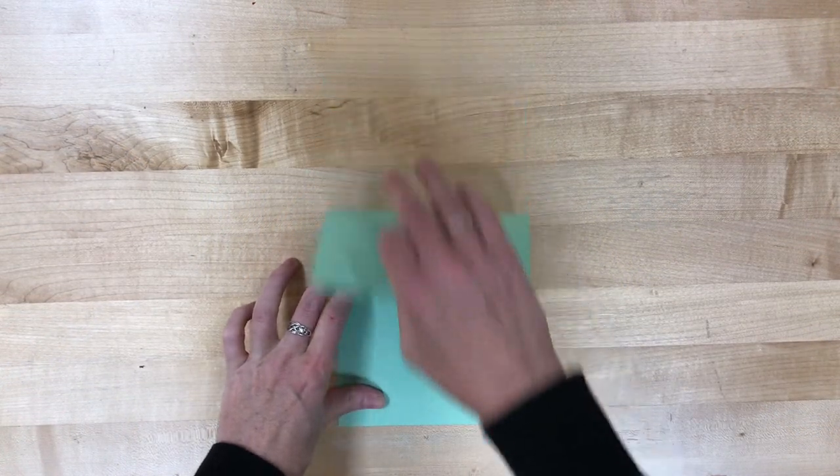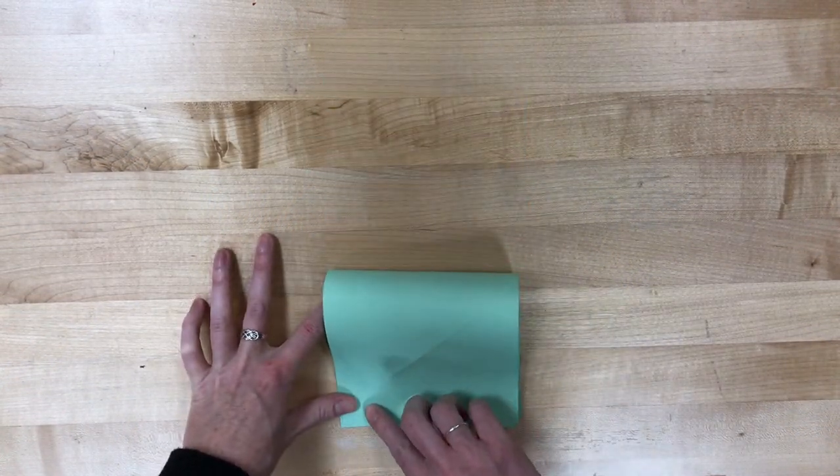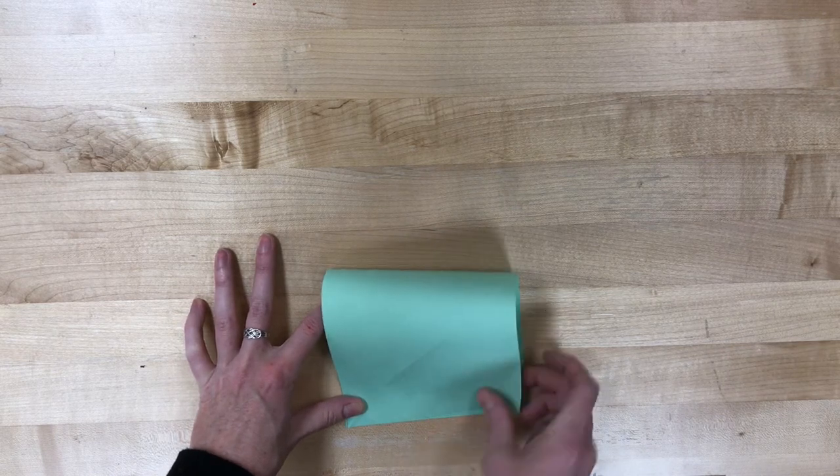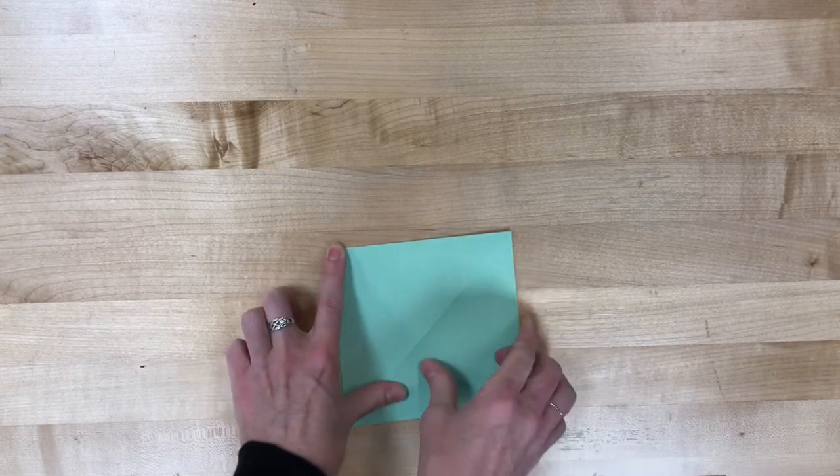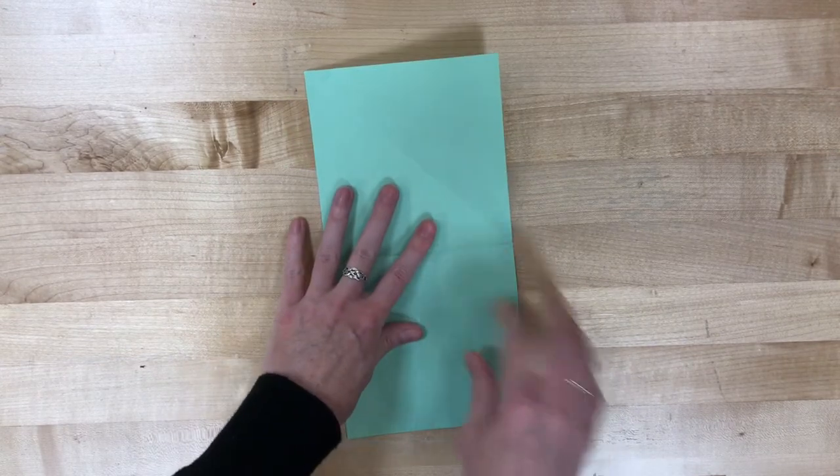Alright guys, we are gonna make a hopper. So take the top of your paper and fold it down to match up with the bottom of your paper, flat side to flat side, and get a nice sharp crease and go ahead and unfold it.